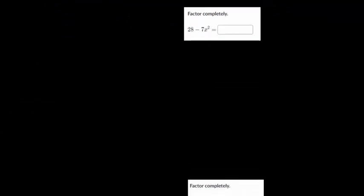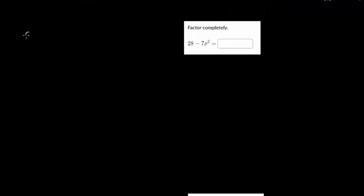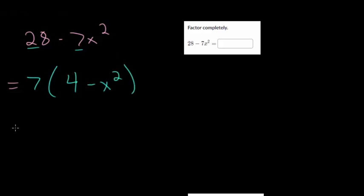So on to another problem. Let me just rewrite this as 28 minus 7x squared. We're again going to see if we can do simple factoring first. The greatest common factor of these, numerically, is 7. So we'll pull a 7 out, and we're left with 4 minus x squared. This is a difference of two squares. So you have 7 times 2 squared minus x squared.